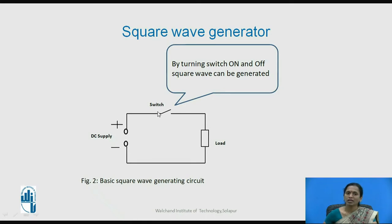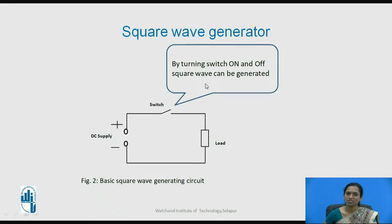This switch can be a mechanical switch or an electrical switch. With a mechanical switch there will be wear and tear losses. So the switch can be a component such as a transistor, a flip-flop, or any kind of switching element. By turning the switch on and off, square waves can be generated. Our aim is to study the multivibrator using a transistor as the basic switching element.